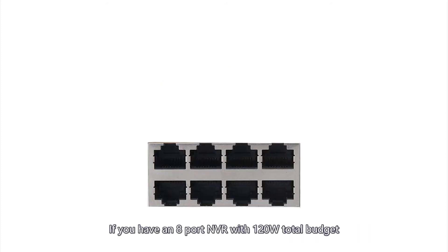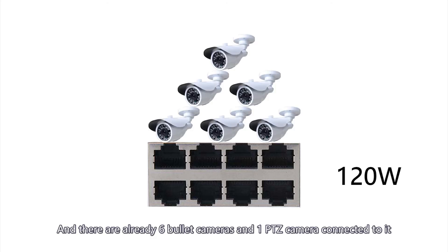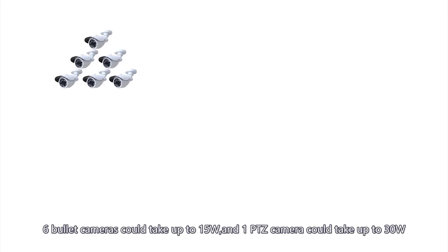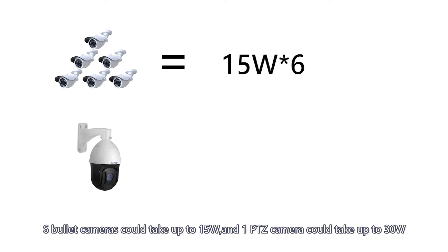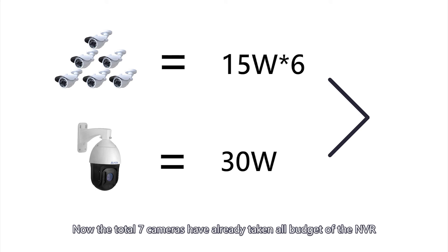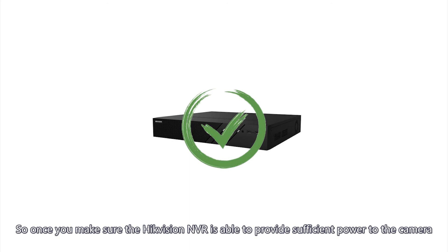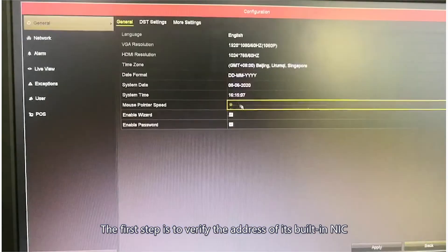If you have an 8-port NVR with 120W total budget, and there are already 6 bullet cameras and 1 PTZ camera connected — 6 bullet cameras taking up to 5W each and 1 PTZ taking up to 30W — the total 7 cameras have consumed the entire NVR budget, and you cannot add another camera powered by the NVR. Once you confirm the NVR can provide sufficient power, the first step is to verify the address of its built-in NIC.